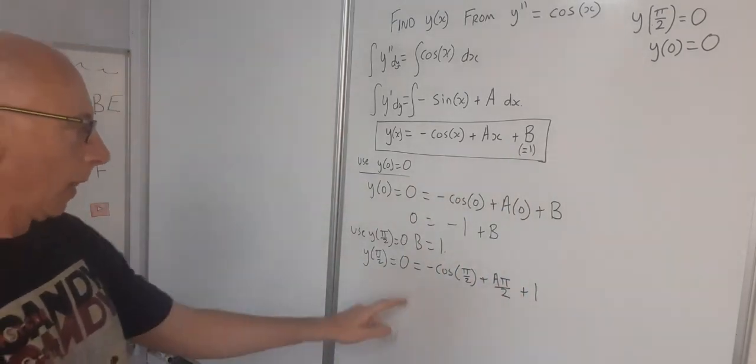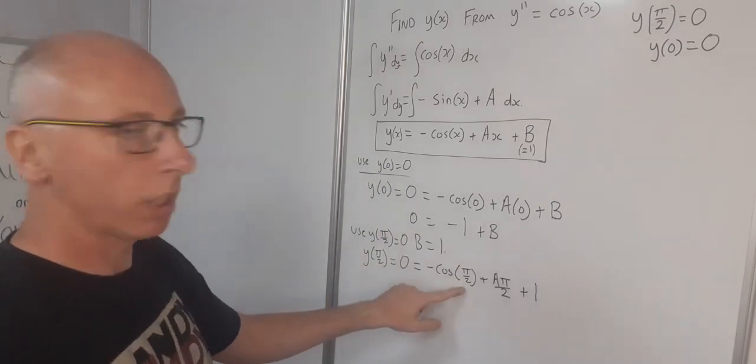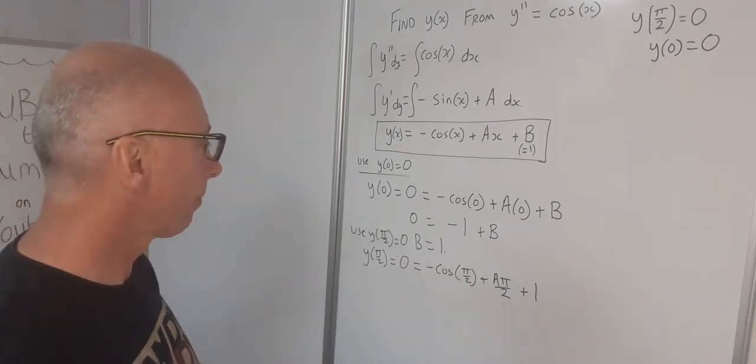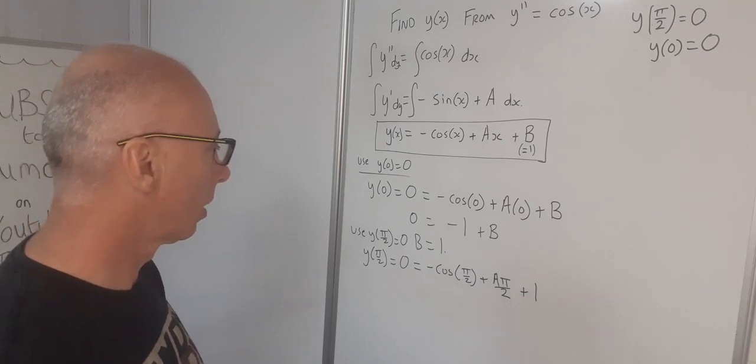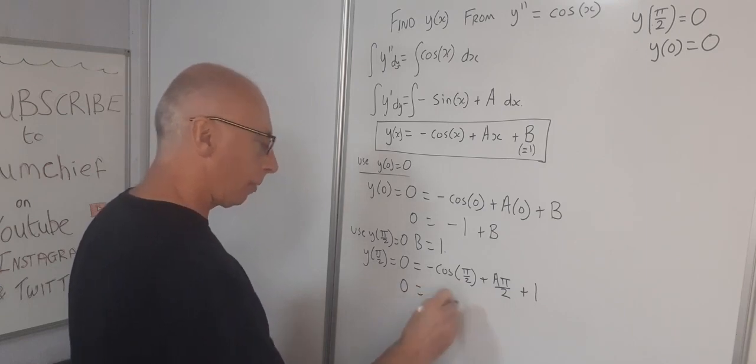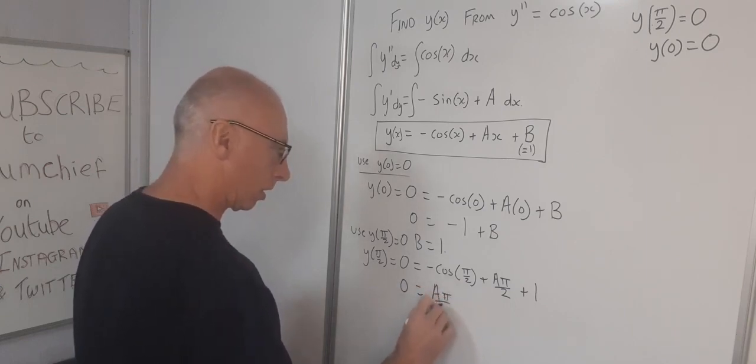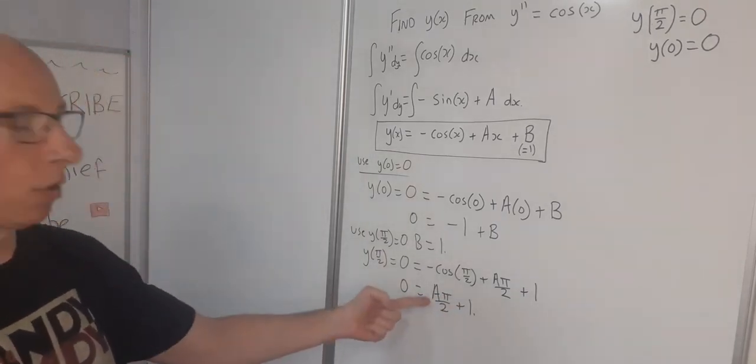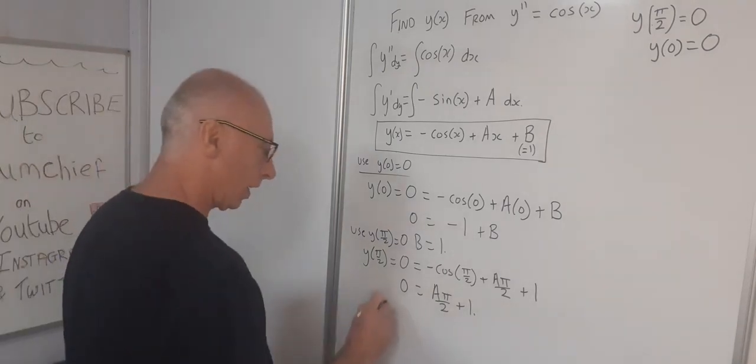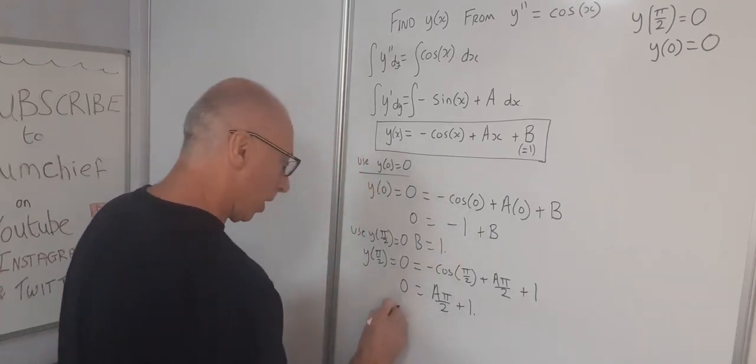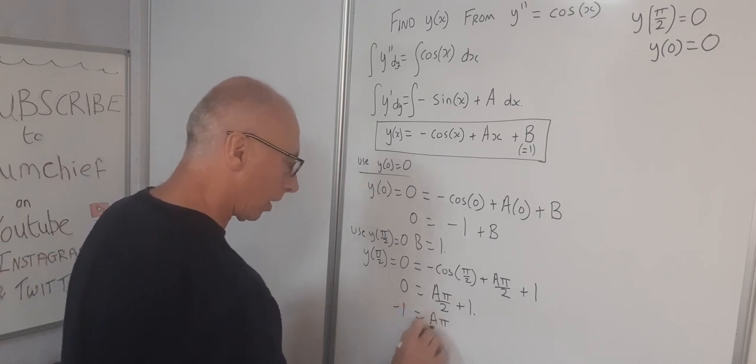We can just clean this up a little bit, because we know what cosine of pi over 2 is, that's going to be 0. So 0 equals a pi over 2 plus 1. So we know that is 0. So now we can solve for our a. So bring the 1 to the other side.